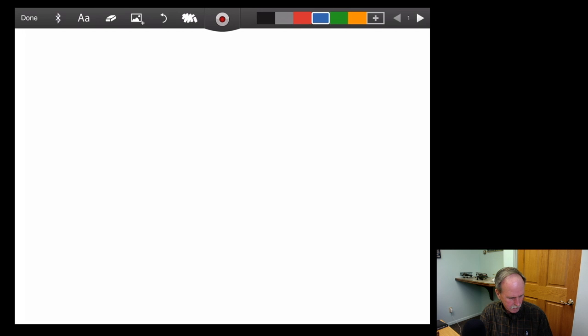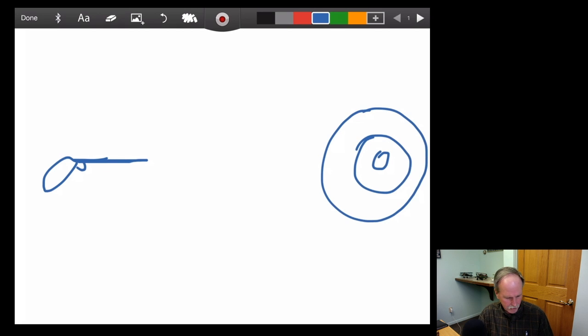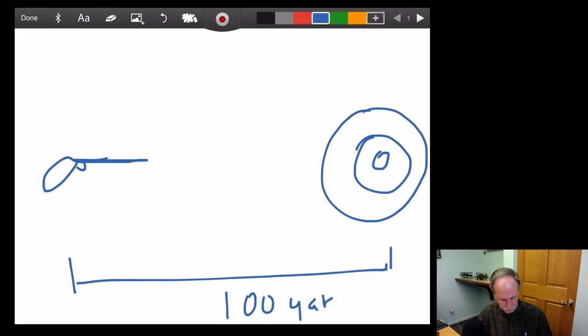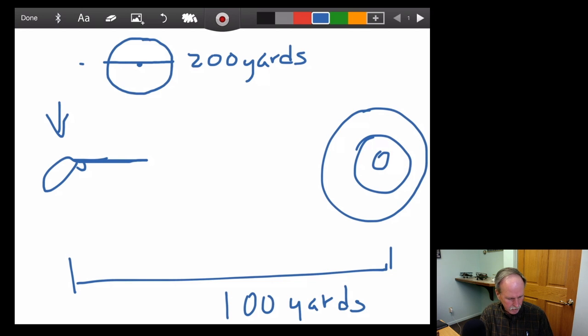So say we've got a target. We've got a rifle here and then we've got a target. Now if this distance is 100 yards, alright, you can imagine the shooter right here sitting in the middle of a circle and the diameter of that circle will be 200 yards. So if you want to find the circumference of that circle, it's 200 times pi.